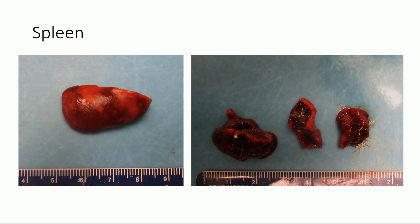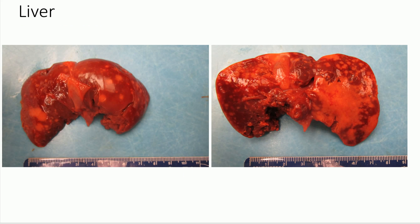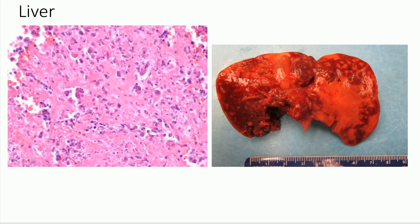Looking at the spleen, the undisturbed capsular surface shows the same kind of variegated appearance and irregular discoloration associated with necrosis. On the cut surface, it is very hemorrhagic. In the liver, we see a very similar appearance — irregular regions of discoloration giving a variegated pattern, with a large region that would feel very soft due to necrosis. Microscopically, there is quite a bit of necrosis and hemorrhage.